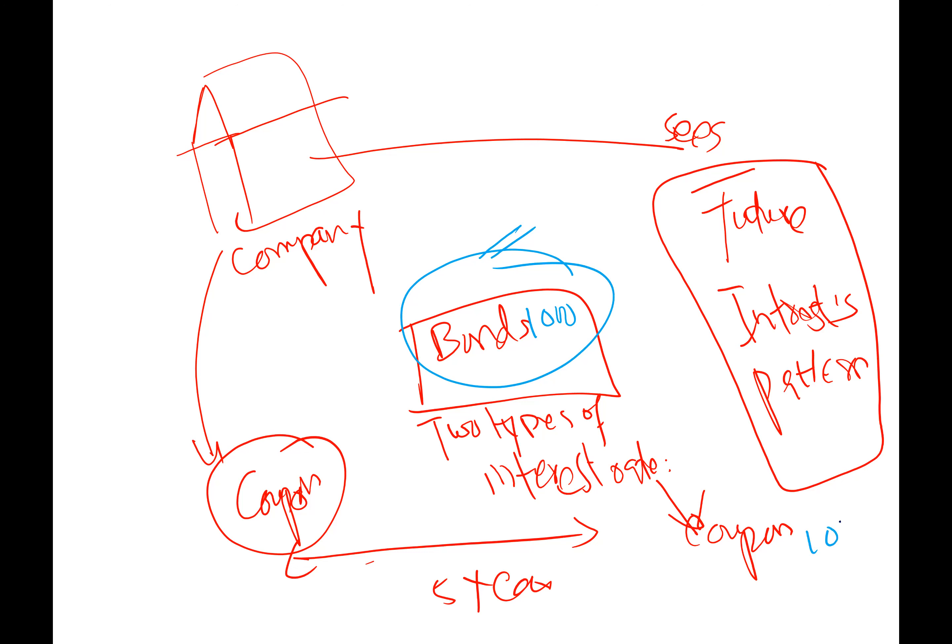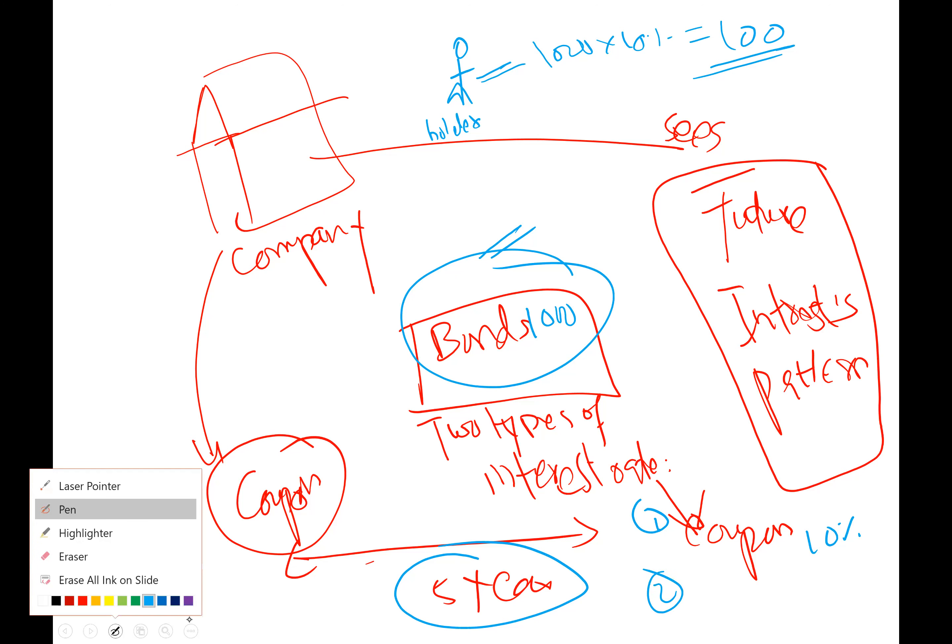If coupon is 10%, it means people who are holding the bond are getting $100 every year for the five years. And the other interest is called market rate interest or bank rate interest.